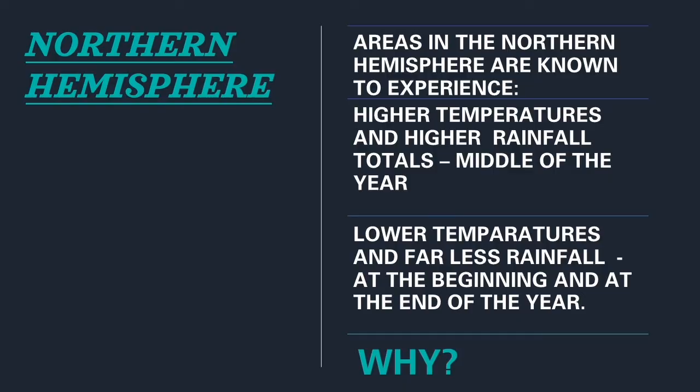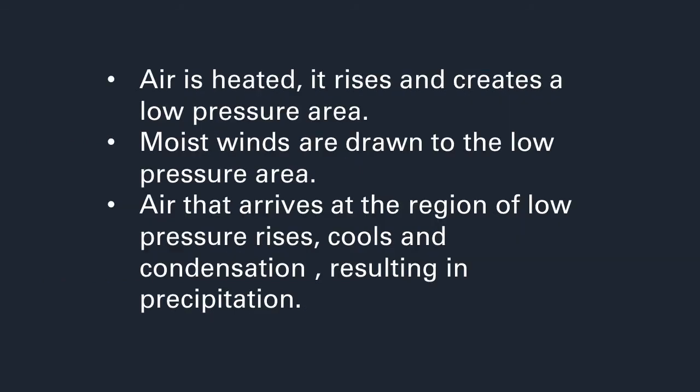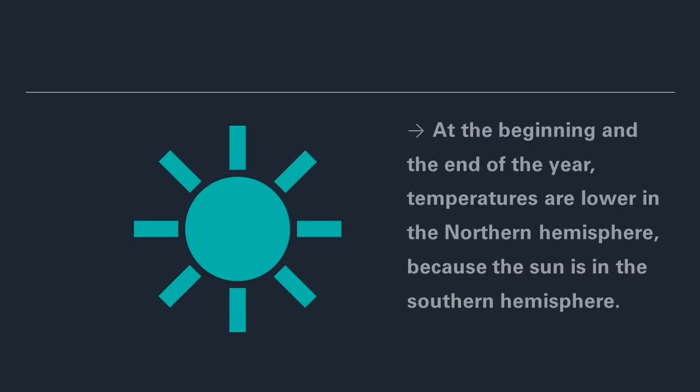The sun tends to move to the northern hemisphere in the middle of the year, between the months of May and September, meaning the ITCZ is found in the northern hemisphere during this time. When the sun and the ITCZ then move to the southern hemisphere at the beginning and end of the year, temperatures and rainfall in the northern hemisphere become lower during that period.